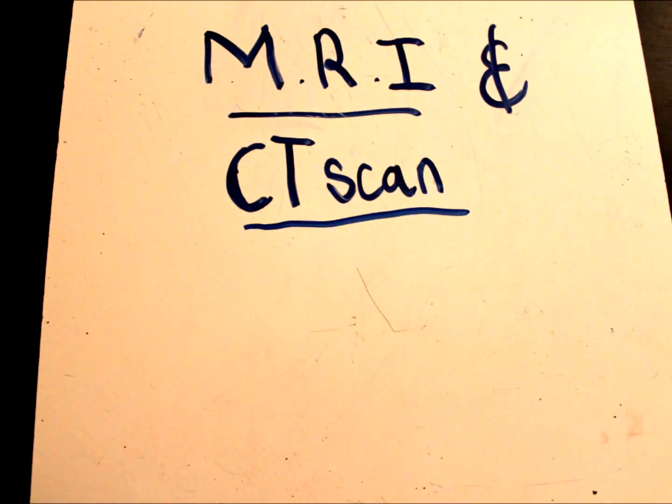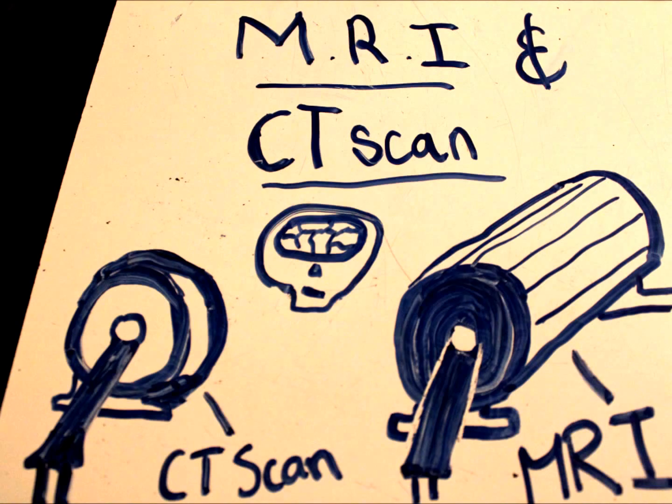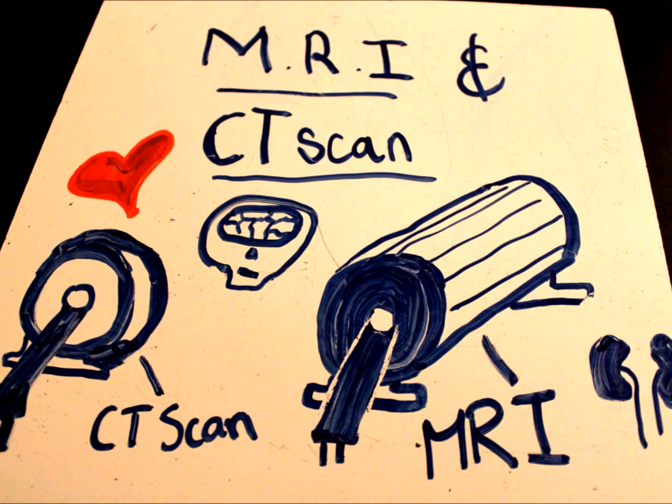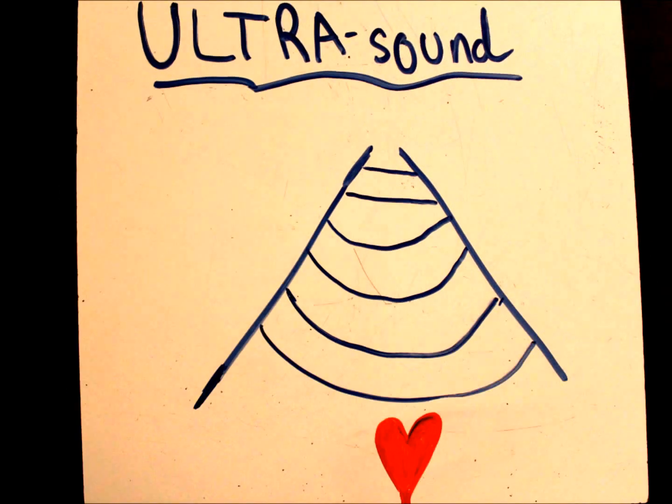MRI and CT scan uses electromagnetic waves to check any brain defects or any kidney defects. The ultrasound is used to check any heart defects.